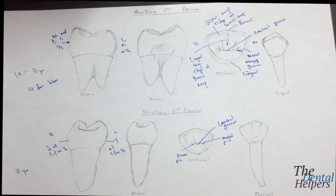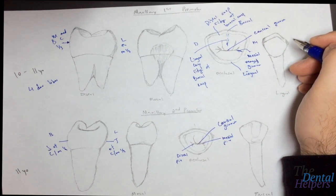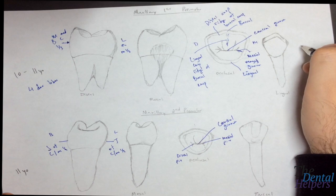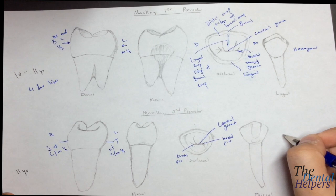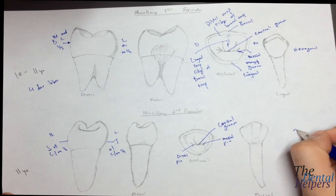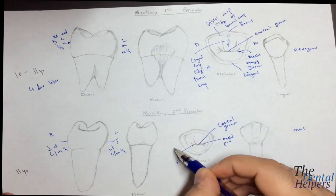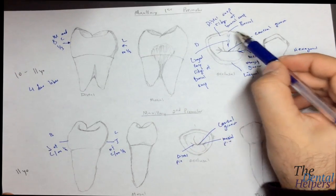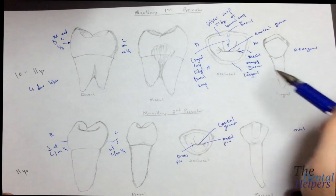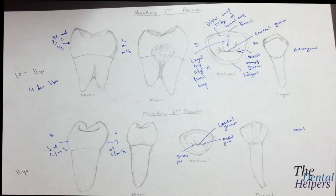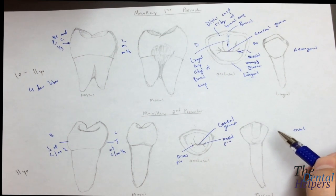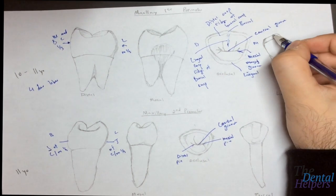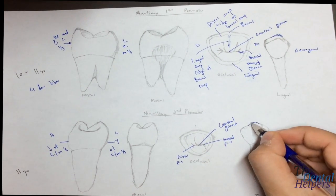Looking at the coronal outline, on the maxillary first premolar it looks more hexagonal, while on the second it's going to be more oval and not as defined. Looking at the cusps themselves, the buccal cusp is a lot sharper on the maxillary first compared to the maxillary second, where the buccal cusp is more blunted.